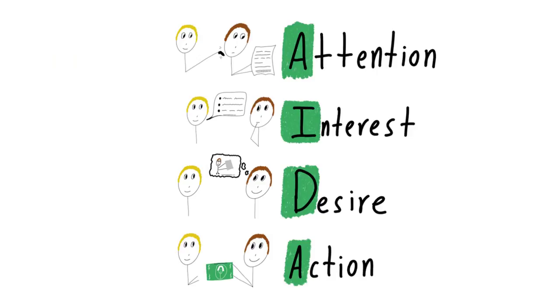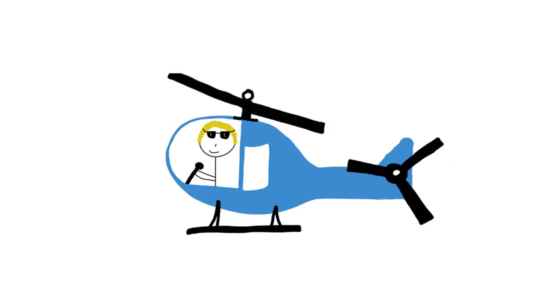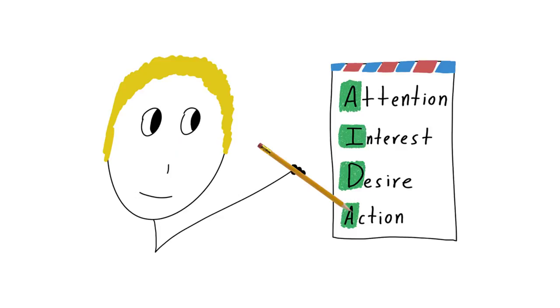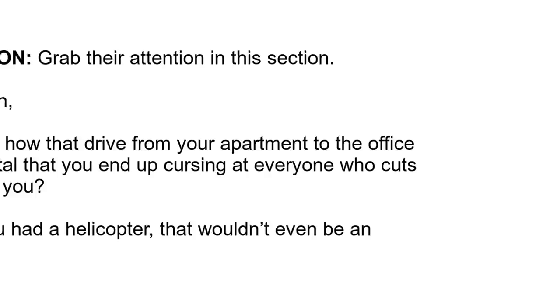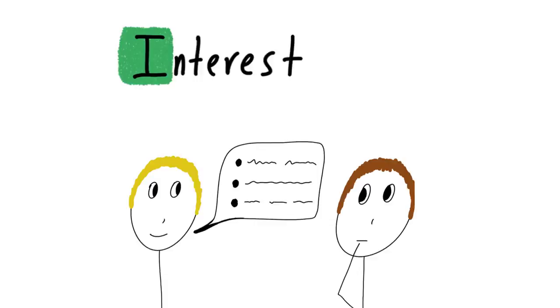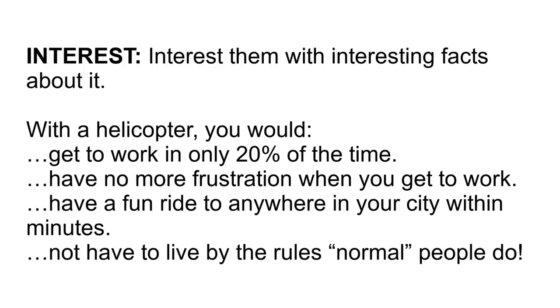Here's an example of the ADA formula — we're going to try to sell someone a helicopter. Using the ADA formula as a base, with the attention, interest, desire, and action sections, we can build a basic cold email pitch or sales page. Let's grab their attention: Hey Jason, you know how that drive from your apartment to the office is so brutal that you end up cursing at everyone who cuts in front of you? Well, if you had a helicopter, that wouldn't even be an issue. Now let's interest them: with a helicopter, you'd get to work in only 20% of the time, have no more frustration, have a fun ride wherever you want in the city within minutes, and you wouldn't have to live by the rules normal people do.